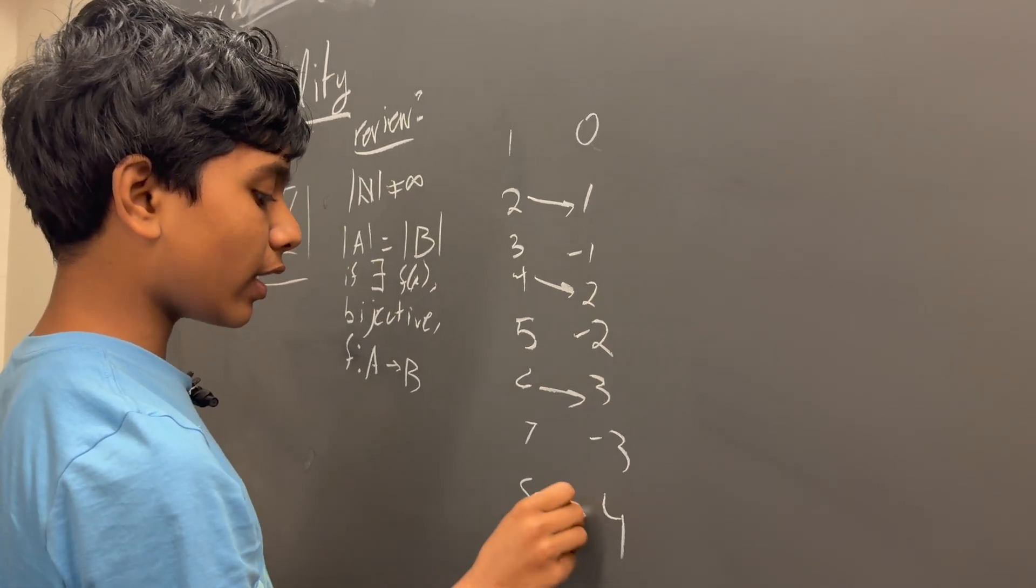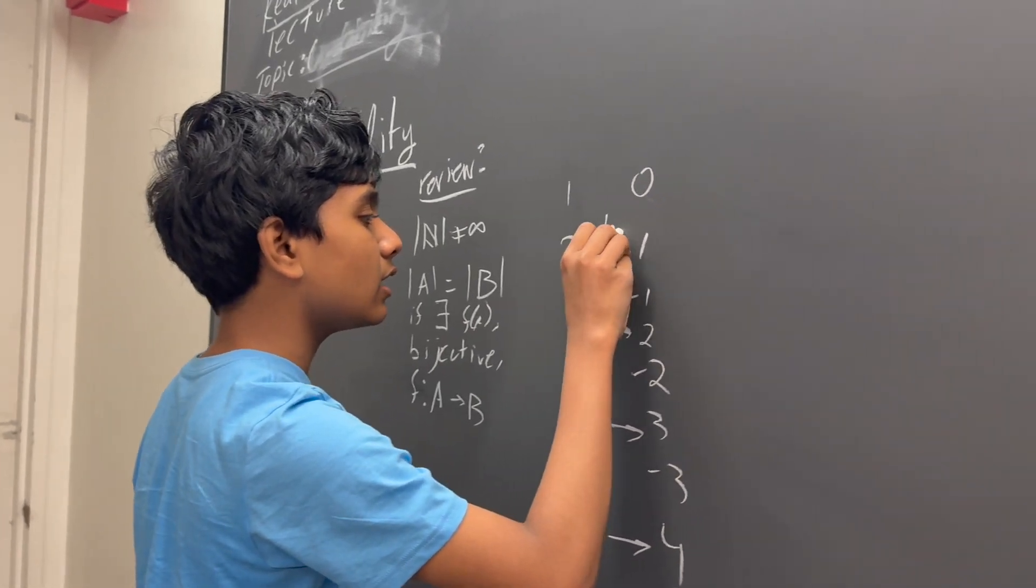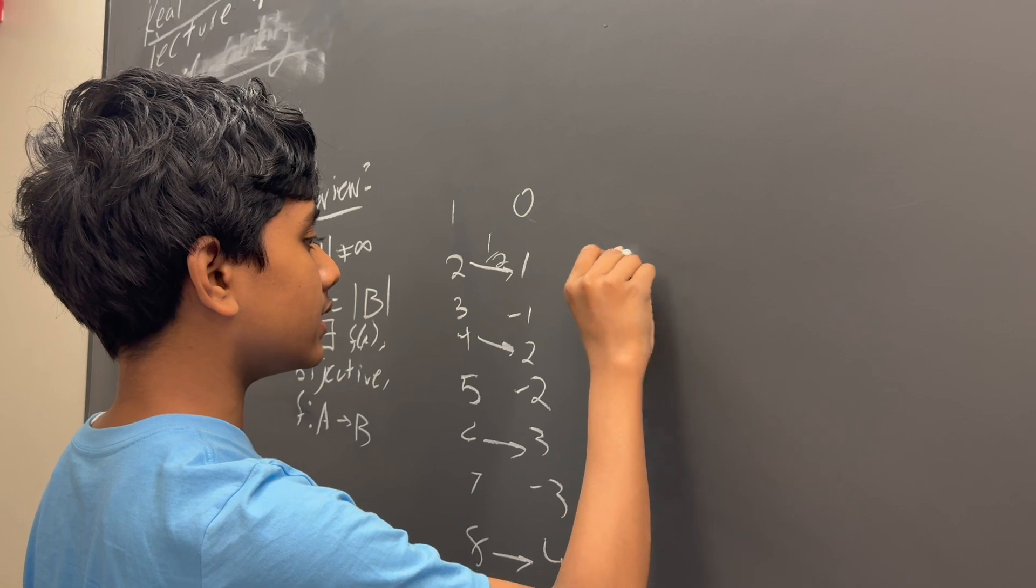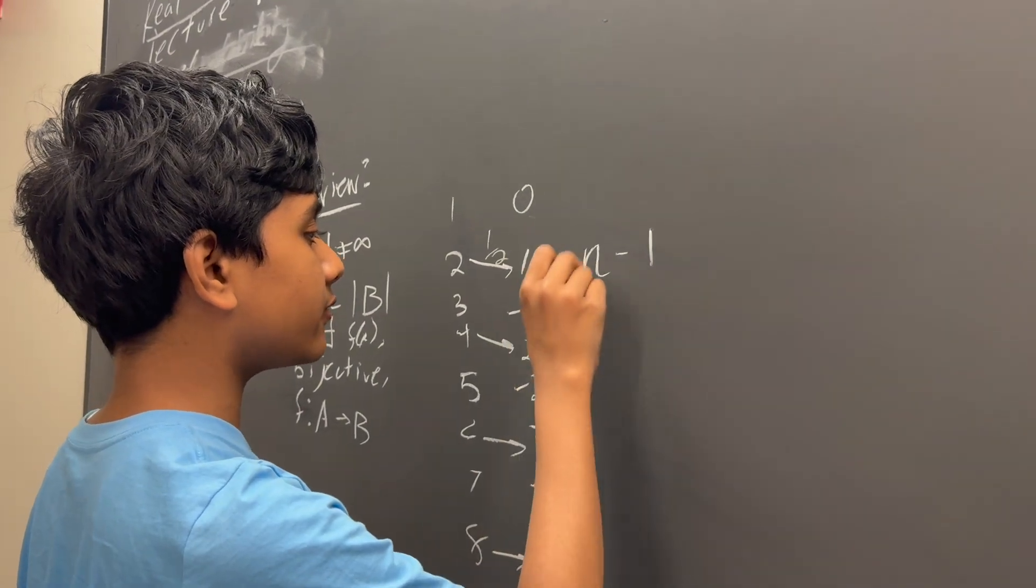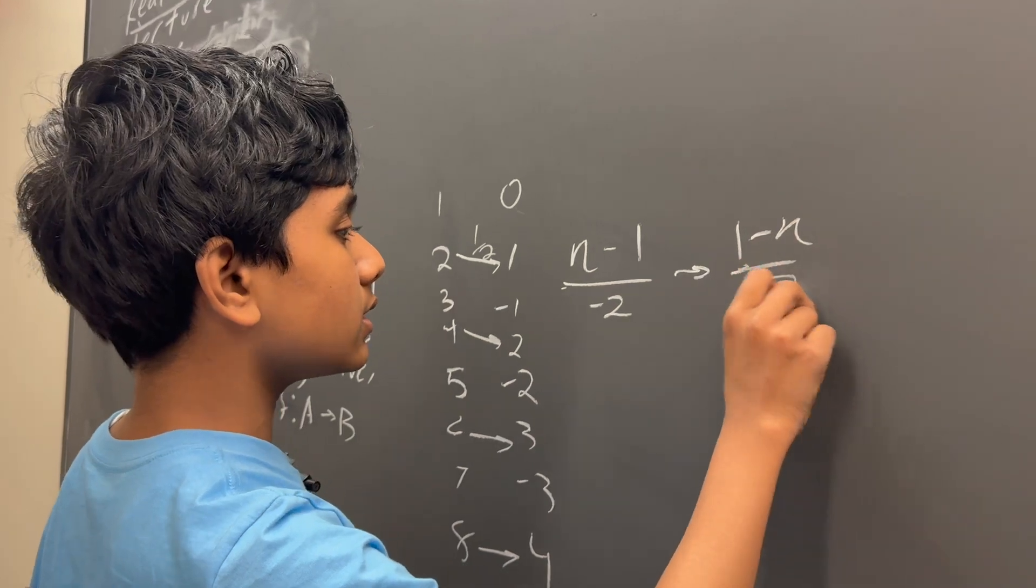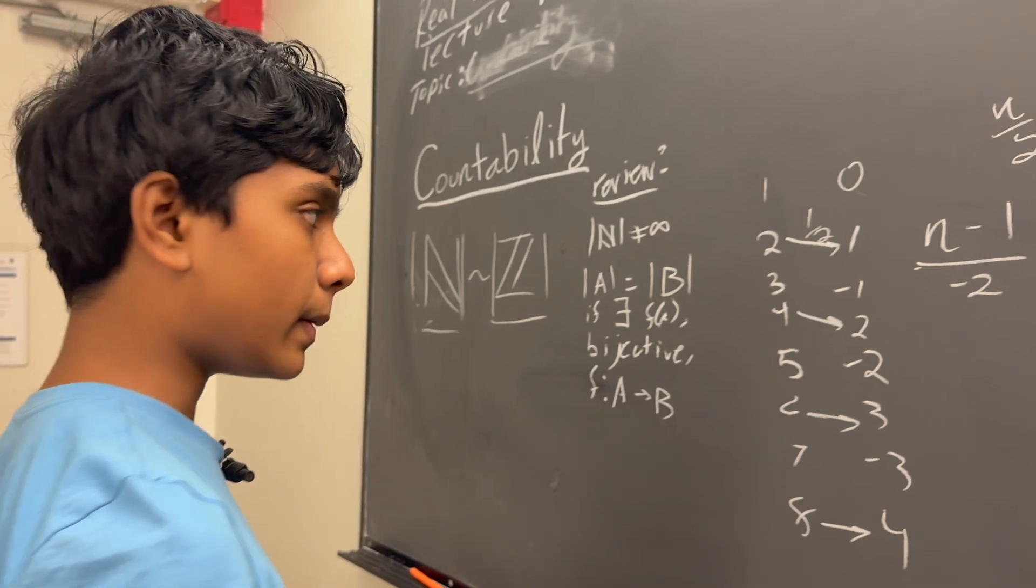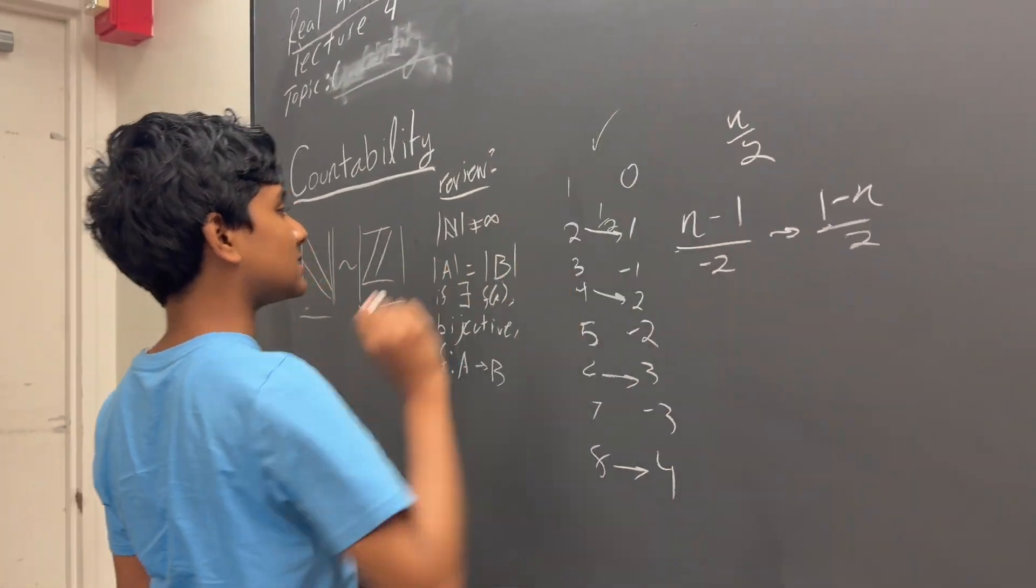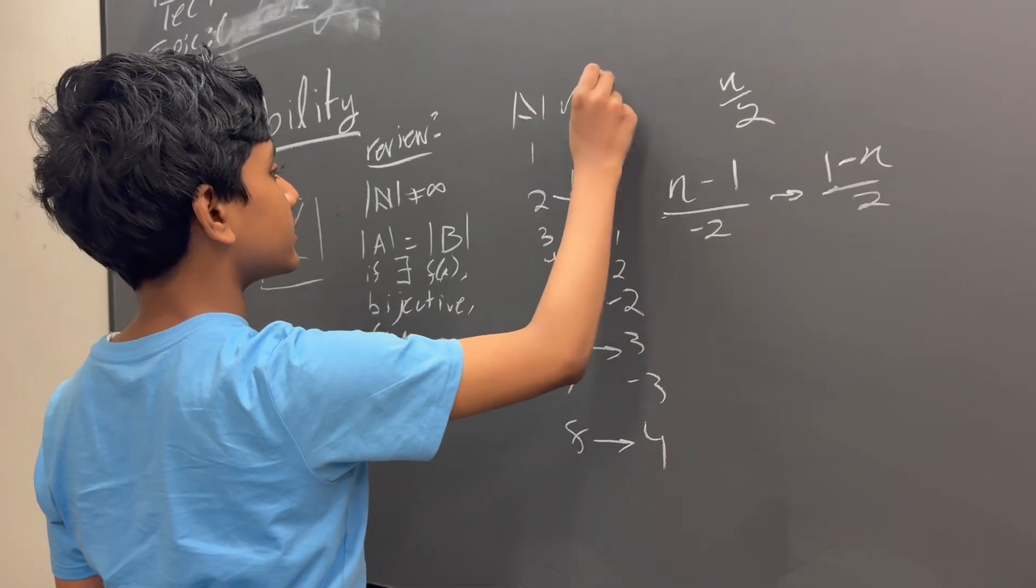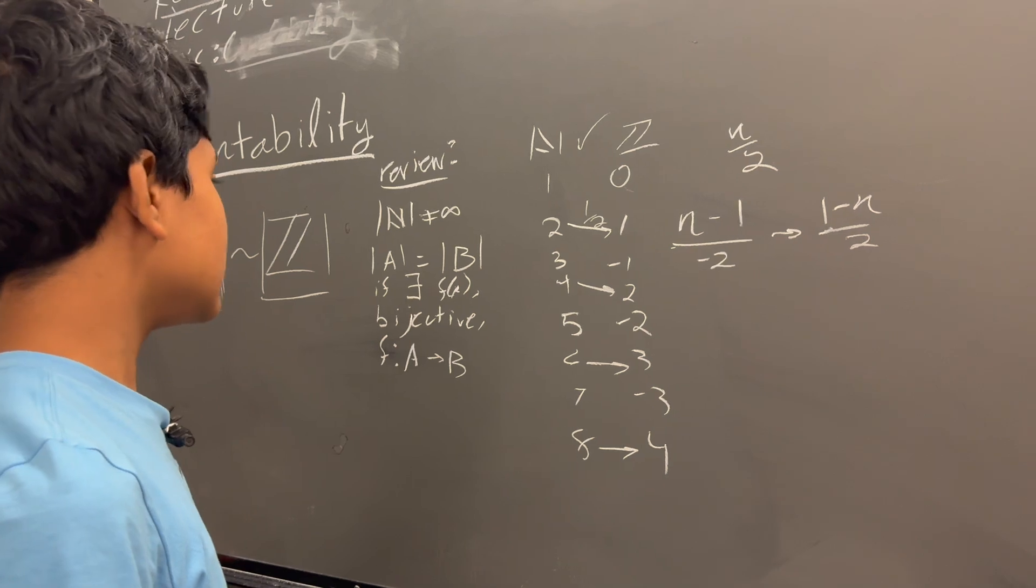For every even number, you will notice that the output is exactly n over 2. For every odd number, it's slightly more complicated. We subtract 1 from them and divide by minus 2, so it's 1 minus n over 2. Both n over 2 and 1 minus n over 2 are bijective. Thus, the natural numbers are congruent to the integers. Not congruent. They have the same cardinality.